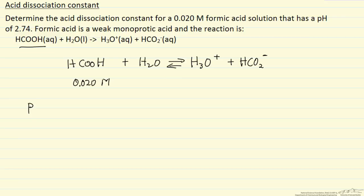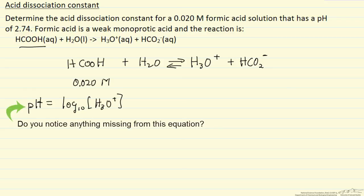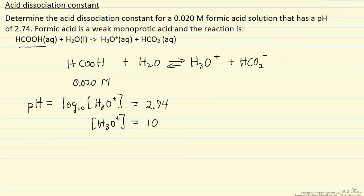The pH is equal to the negative log base 10 of the acid concentration, and this is 2.74, so we can take the exponential of both sides. I need to be a little more careful—I left out the minus sign here. pH is minus the log, so that means this is minus 2.74.